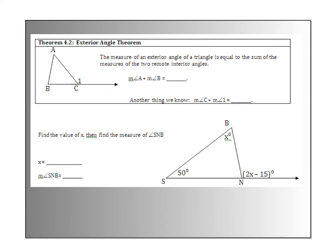The exterior angle theorem states that the measure of an exterior angle of a triangle is equal to the sum of the measures of the two remote interior angles. In other words, angle A plus angle B added together should be the same size as angle 1. Also, angle C plus angle 1 should be 180 because they're a linear pair. This is a theorem that a lot of people forget when they take the quiz, so try to keep this one in mind.